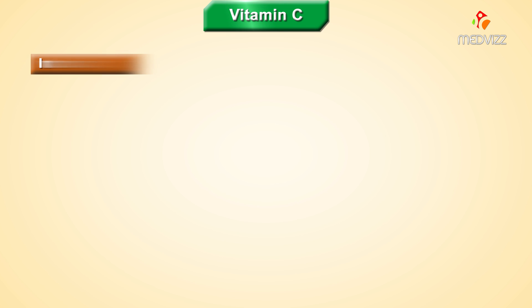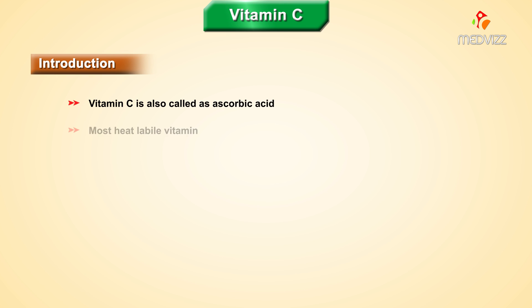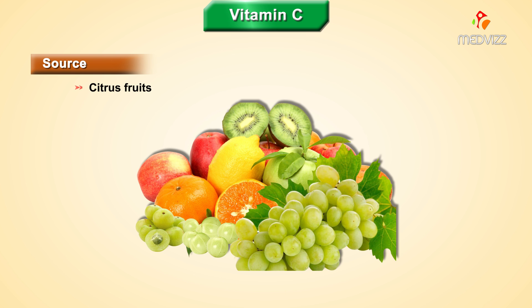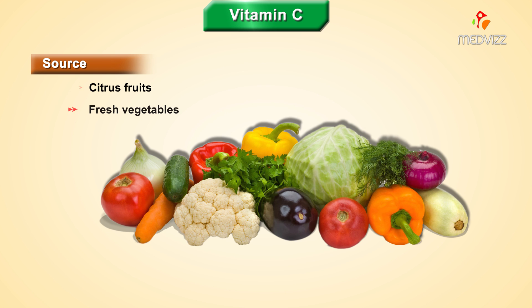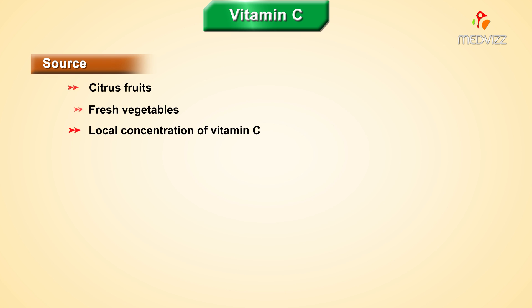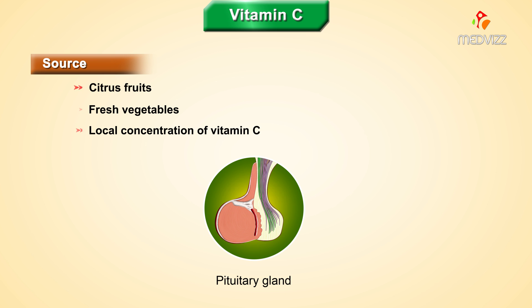Let us begin the session with the water-soluble vitamins, and the first one is Vitamin C, which is also called ascorbic acid. Ascorbic acid is the most heat-labile vitamin and it acts as a strong reducing agent. The sources are citrus fruits and fresh vegetables.